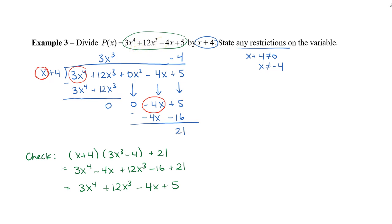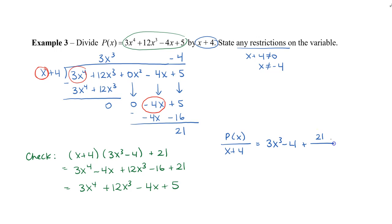So I can rewrite the final answer as p(x) divided by x plus 4 equals 3x cubed minus 4 plus 21 over x plus 4.